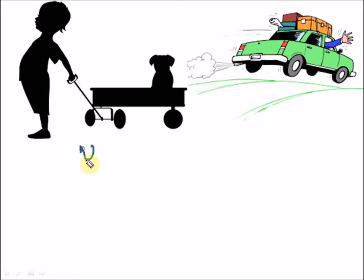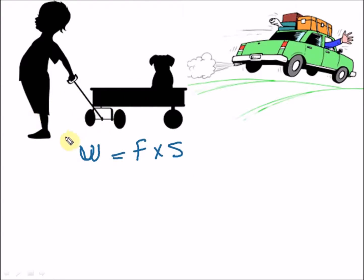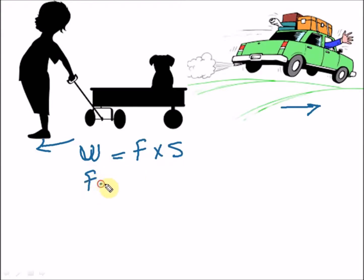So work W is equal to force times s, which is the distance covered. This is in the direction of the force. For the boy pulling the cat, the direction of the force is that way, and for the car traveling, the direction of the force is that way. So W = F × s, where F is force and s is distance.